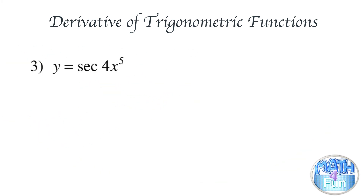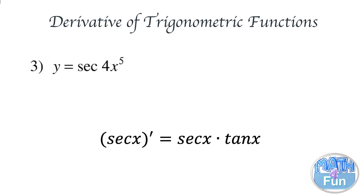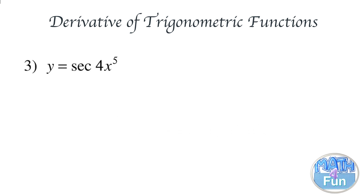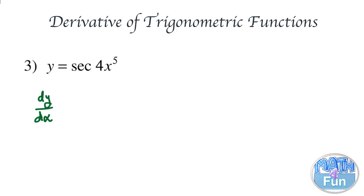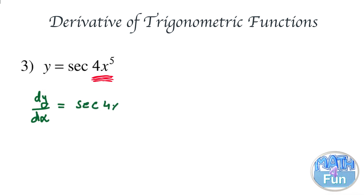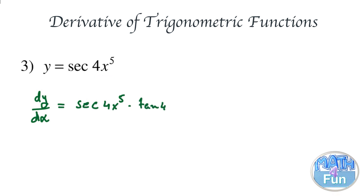Here we have y equal to secant of 4x to the power 5. The derivative of secant is secant times tangent. We can write it as dy by dx — different notation forms all mean the same thing. So dy by dx equals secant of 4x to the power 5 times tangent of 4x to the power 5.